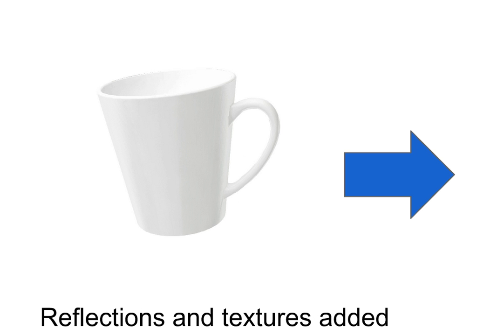Then the 3D model needs to look realistic. So we add reflections and textures so that the model, as you move it round, looks like a real product. It's not always completely photorealistic, as some products are a little different to others like clothing and textures, but in most cases you can get a really good realistic looking product.